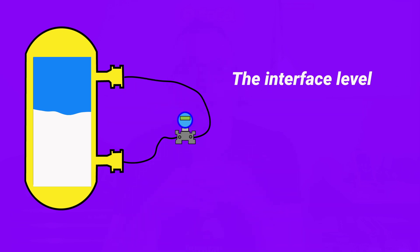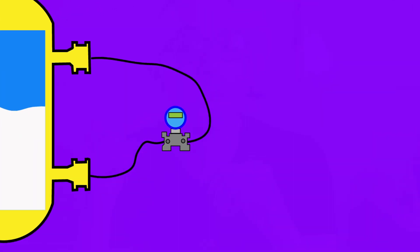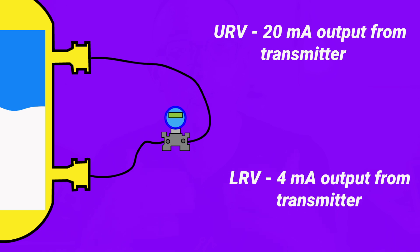Now just like every level transmitter there are only two numbers that it needs in order to measure this level correctly. Those two numbers are the lower range value and the upper range value, the LRV and the URV.